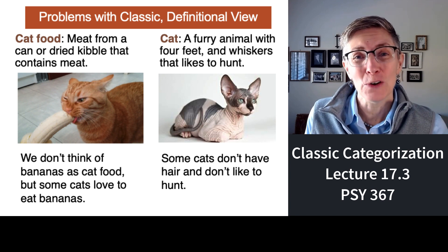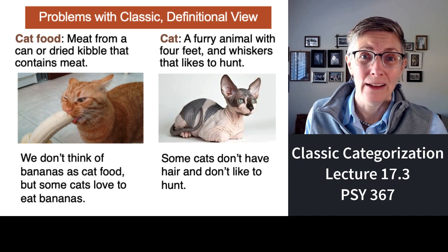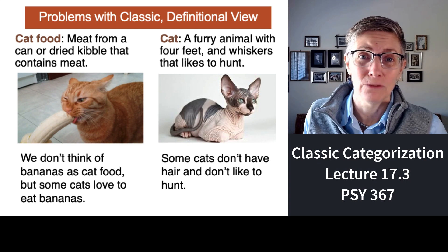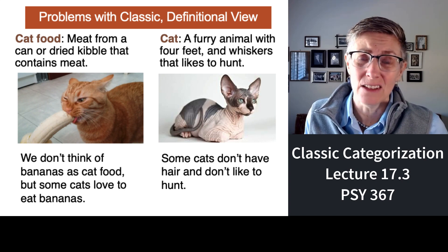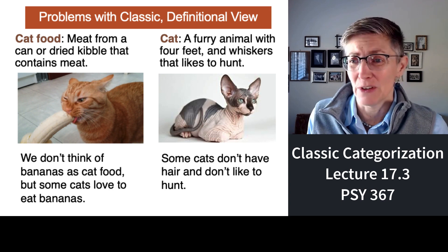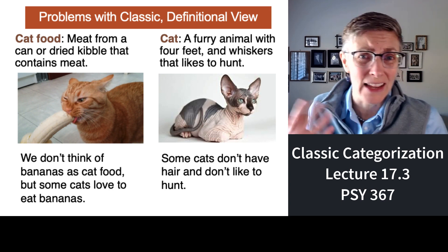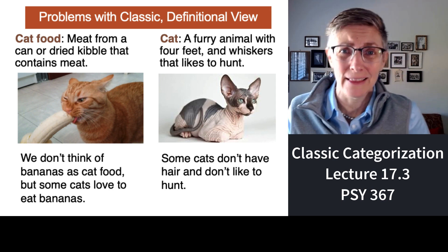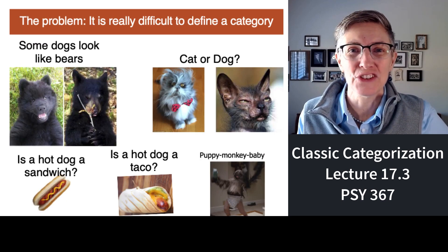How about the category of cat? That's easy, right? Cats — furry, four legs, a tail, pointy ears. But some cats don't have tails. Some cats don't have fur. Some cats like to hunt mice, some don't. Coming up with definitions turns out to be really hard.